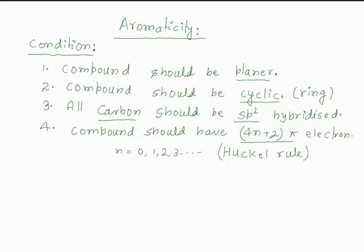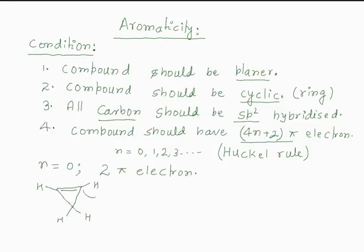For n equals 0, we will have 2 pi electrons. Let us say we want to test the compound cyclopropene — whether this compound is aromatic or not. In this case, one carbon is sp2 hybridized but the other carbon is sp3 hybridized, so this compound is not aromatic.